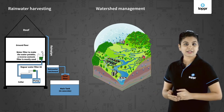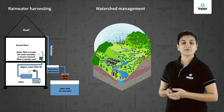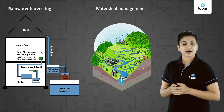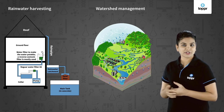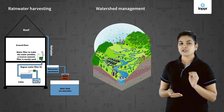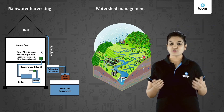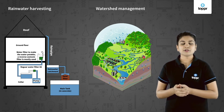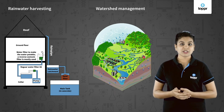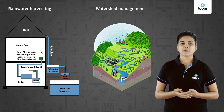In rainwater harvesting, rainwater is collected and recycled into the ground with the help of digging canals. In watershed management, small check dams are built in watershed regions. These check dams increase the absorption of water in the ground and reduce the flow of rainfall to prevent soil erosion. In this lesson, you have learned about the various types of irrigation and new initiatives to increase water available for agricultural land.